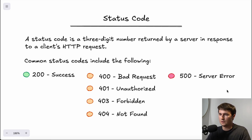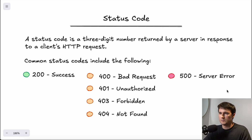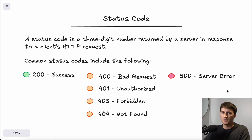A 401 status code means unauthorized — something is wrong with your authentication, which typically means your API key is wrong. 403 means forbidden — your account doesn't have access to the data you're requesting. 404 means not found — you might get this if you type in a URL that doesn't exist. 500 is a server error — it's on the server side. Understanding these status codes is important for debugging; if you get a 500 error, don't make drastic changes to your workflows since it isn't your fault.